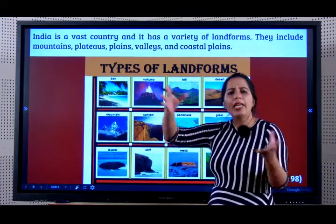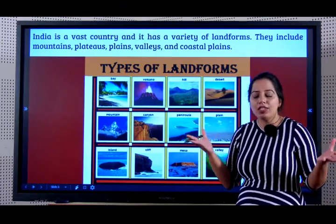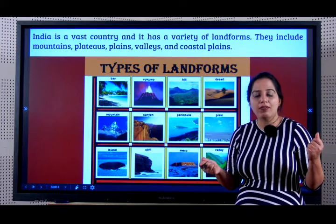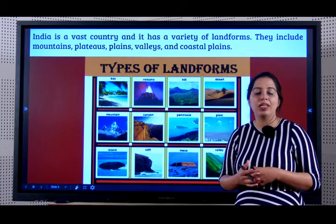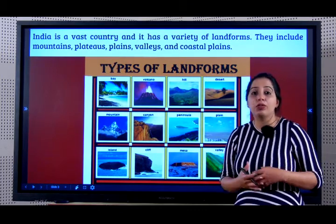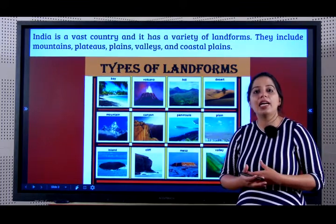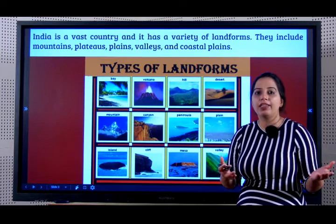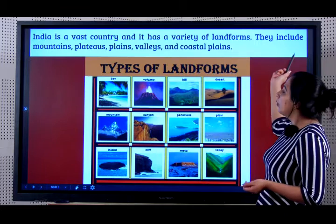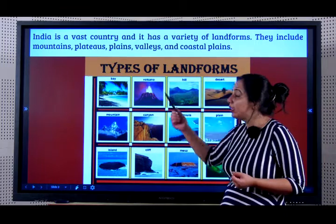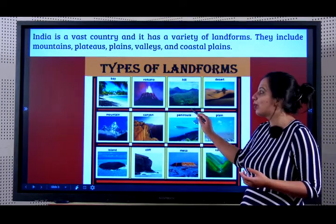India is a vast country and it has a variety of landforms. It is such a unique subcontinent where you will see snowfall and hot deserts. You will see islands, mangroves, coral reefs, rivers, rich agricultural lands — we have a rich variety of everything. These include mountains, plateaus, plains, valleys, coastal plains and so on.